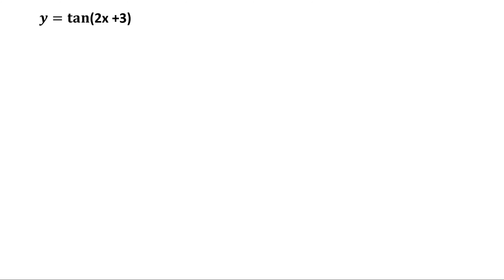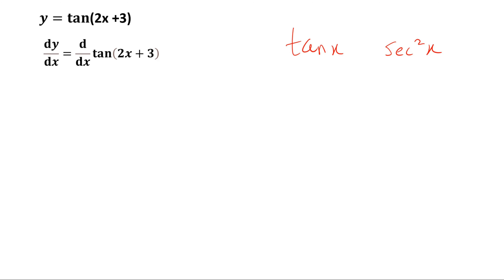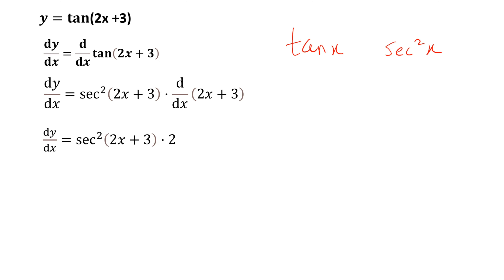y equals to tan of 2x plus 3. Again, this is a composite function — there is a trigonometric function and there is a linear function. First we differentiate the outer function: for tan x the derivative is secant squared x. So dy by dx would be secant squared of 2x plus 3, the inside function remains as it is, times the derivative of 2x plus 3. That equals to secant squared of 2x plus 3 times 2. So the final answer is 2 secant squared of 2x plus 3.